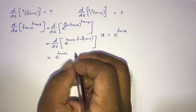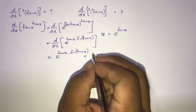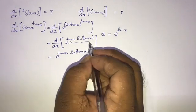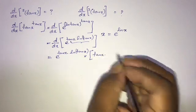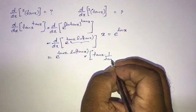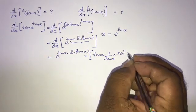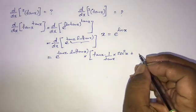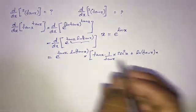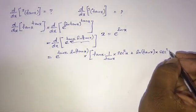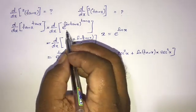Differentiating, we get e to the power of tan x times ln of tan x, multiplied by the derivative of the exponent. Applying the product rule: the derivative of the first function is tan x, times the derivative of the second, which is 1 over tan x times sec squared x, plus ln of tan x times the derivative of tan x, which is sec squared x.